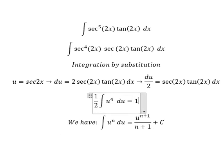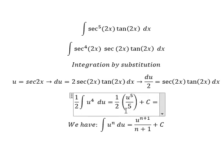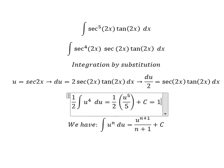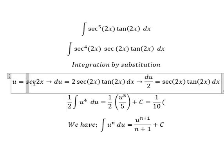So we get u to the power of 5 over 5, and we add the constant C. The 2 and 5 give us 10. Now we substitute back u, which is sec(2x).